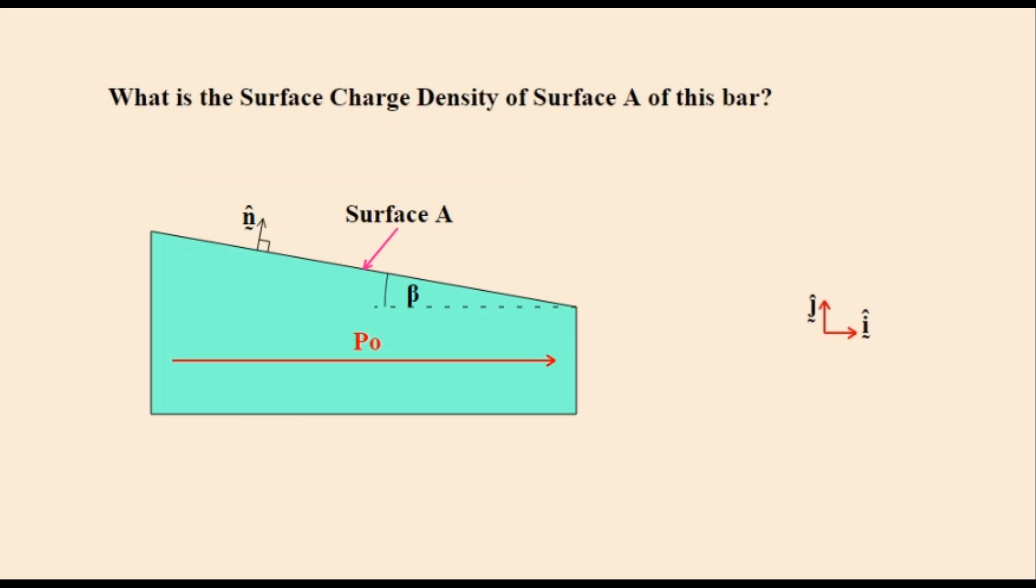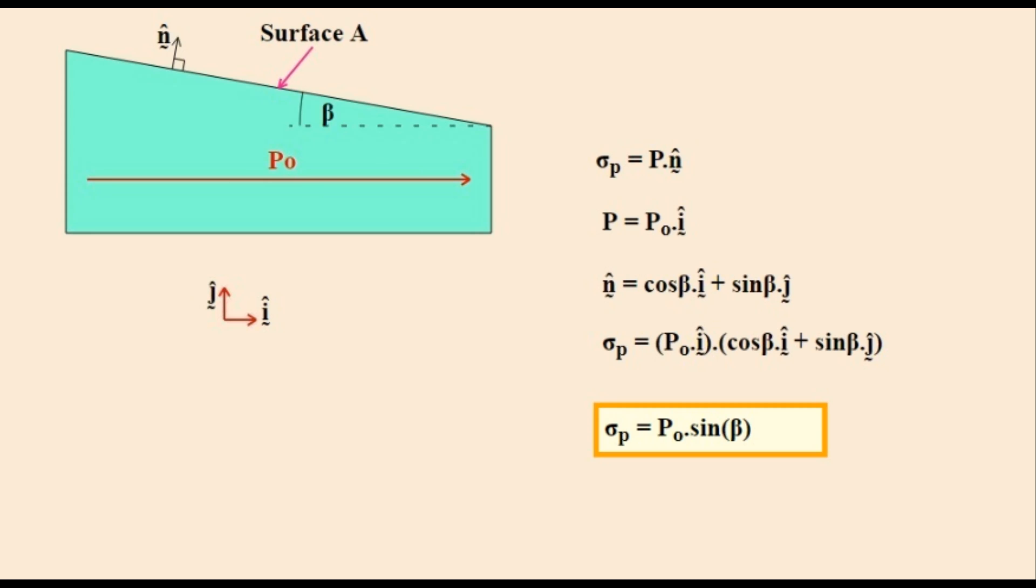Here is another bar with the tilted surface at the top rather than the side and having an angle called beta that is smaller than theta. The surface charge density is P0 times sine beta. It isn't the location of the surface that determines its charge density but only its angle that the surface tilts with respect to the polarization of the object.